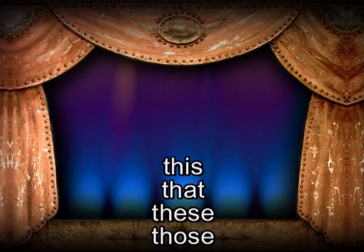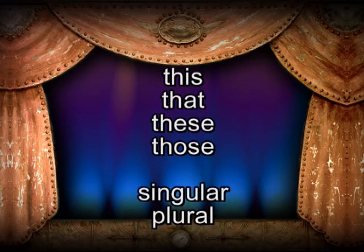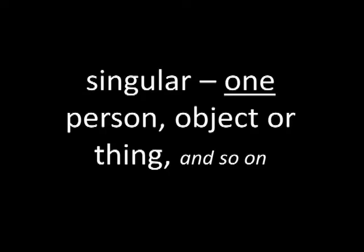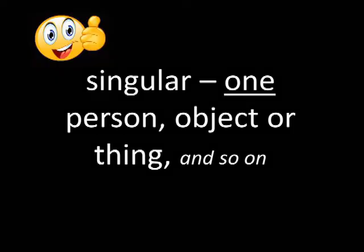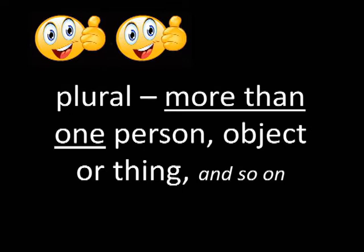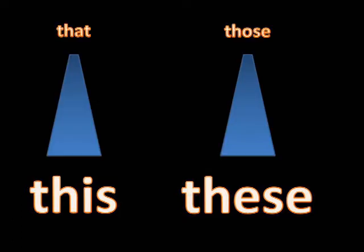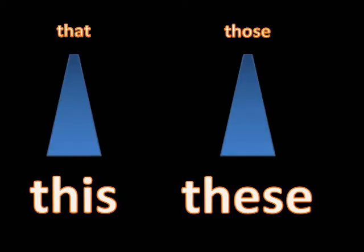Today let's talk about this, that, these and those, and also singular and plural. Before we start, take note of the following two words. Singular means a noun that refers to one person, object or thing and so on. And plural means a noun that refers to more than one person, object or thing and so on. In English we use this, that, these and those depending on the distance that something is relative to you — in other words, how close or far the object or objects and person or people is to you. This and these is used for nearby, and that and those is used for not nearby.